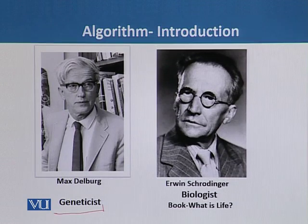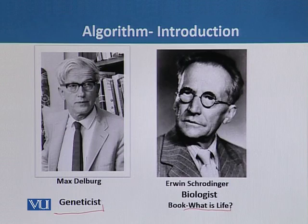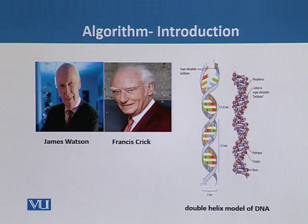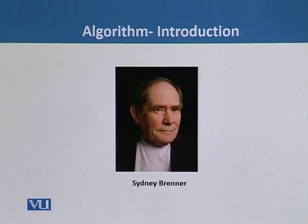Schrödinger, on the other hand, never became a certified geneticist and remained somewhat of a biological dilettante. However, his famous book 'What is Life,' published in 1944, was influential to an entire generation of physicists and biologists. Both James Watson, a biology student, and Francis Crick, a physicist, switched careers to DNA sciences after reading it. Nobel laureate Sydney Brenner even admitted to stealing a copy from a public library in Johannesburg, South Africa.